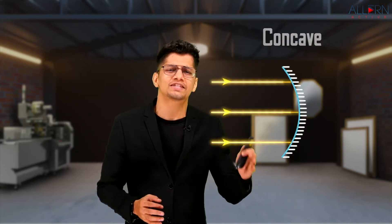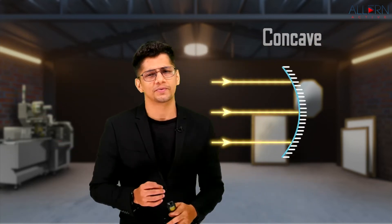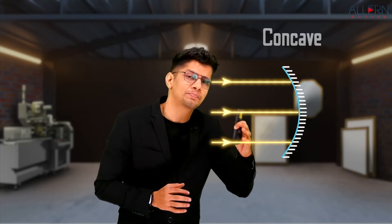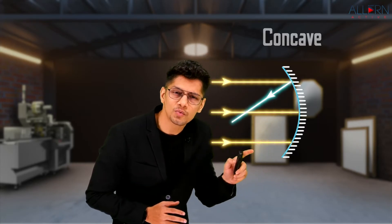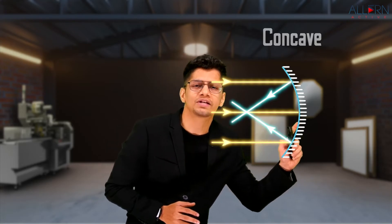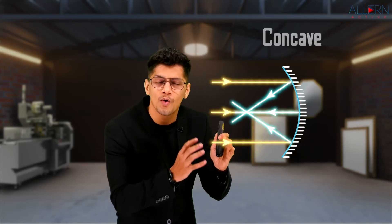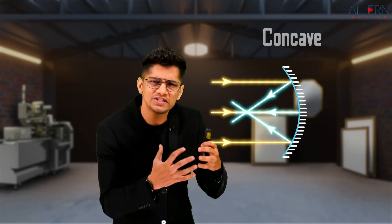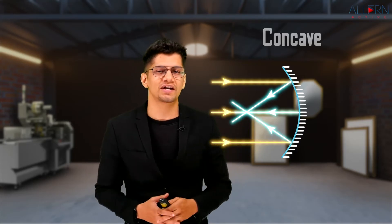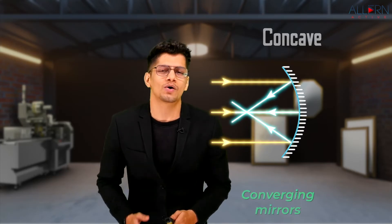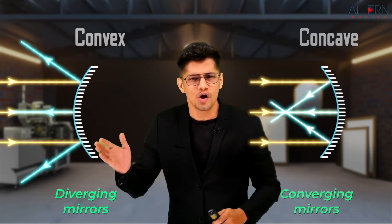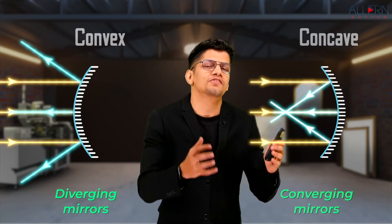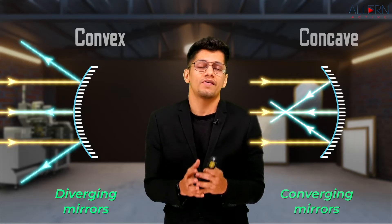Similarly, we'll incident some parallel rays of light on a concave mirror. This particular ray of light will get reflected in the downward direction, this ray in the upward direction, and this particular ray will get reflected back. Now, are these rays coming towards each other or moving away from each other? Coming towards each other — this in technical terms is called converging. So concave mirrors are converging mirrors and convex mirrors are diverging mirrors.